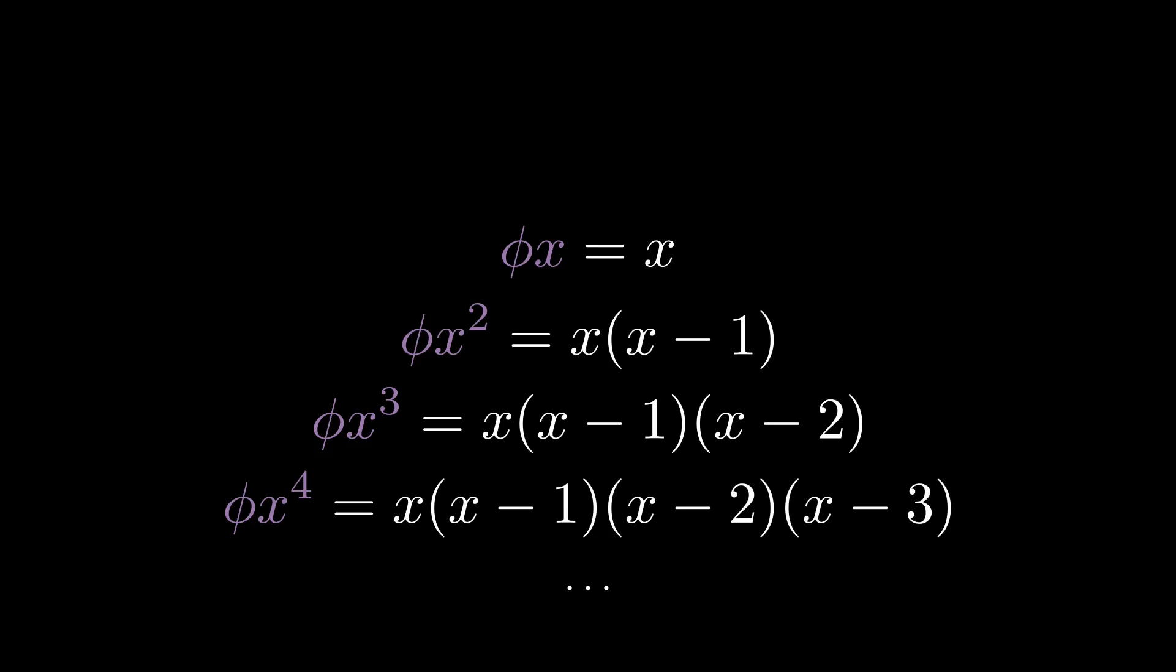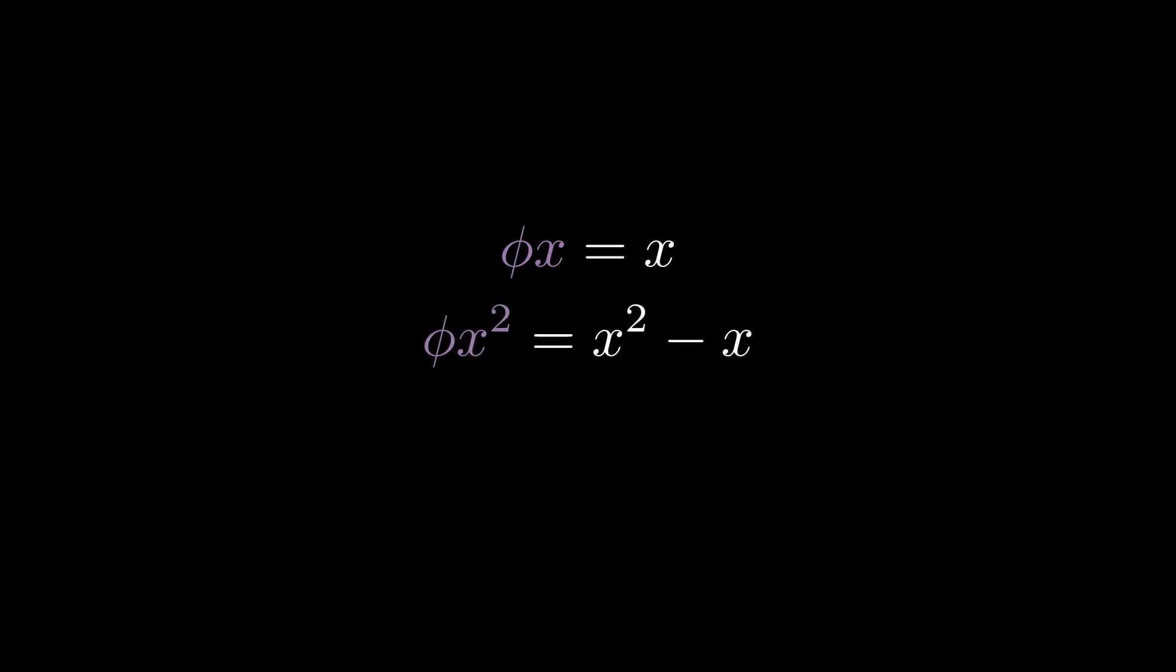Well, for polynomials at least, it's pretty straightforward. The phi of x to the n is just x to the falling n by definition. And for phi inverse, we can use exactly the same trick we used earlier for delta inverse. x equals phi x, so we can substitute that in here.